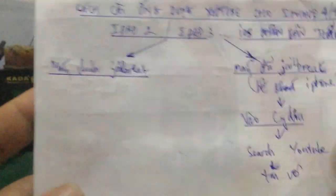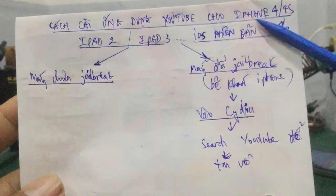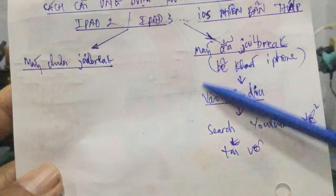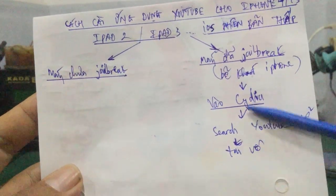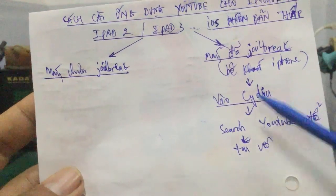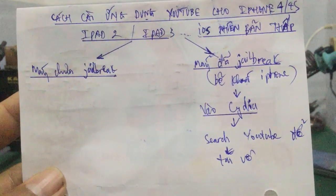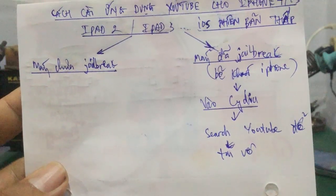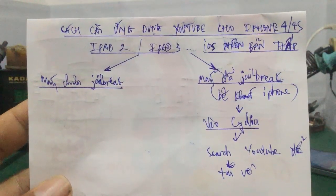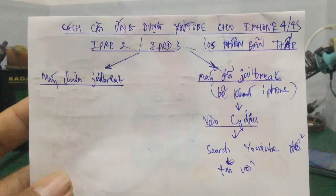Đối với những cái máy chưa jailbreak thì làm như vậy. Còn những cái máy đã jailbreak thì các bạn vô Cydia, vào phần shop, cũng giống như bên App Store, tải cái phần YouTube vào là xài được. Có ý kiến thắc mắc gì các bạn hãy để lại comment dưới video, mình sẽ support hỗ trợ cho các bạn. Hẹn gặp lại các bạn trong video kế tiếp. Chào các bạn.